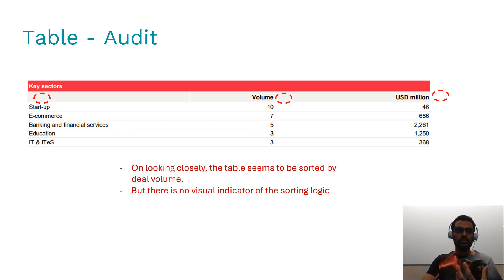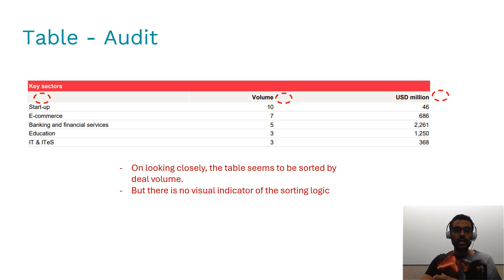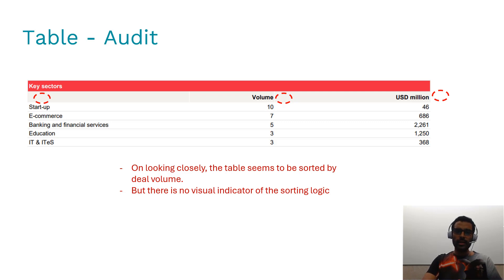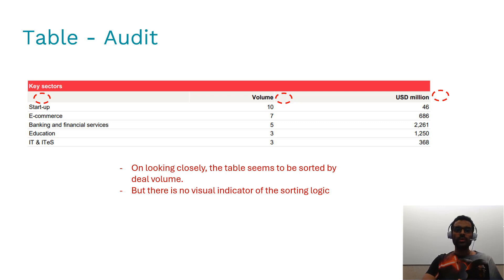The third problem is there's no indication of how the table has been sorted. If I inspect it manually I understand it's most likely in descending order of deal volume, but there's no visual indicator that this is in fact the case. So now we're going to make over this table and correct these things individually.